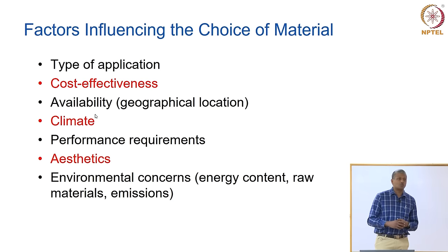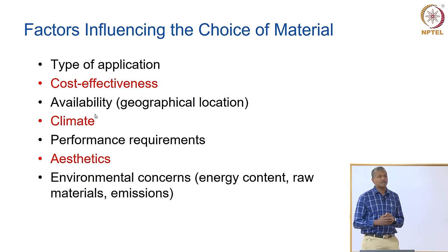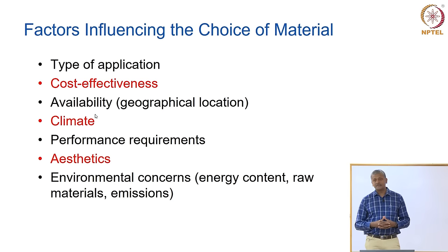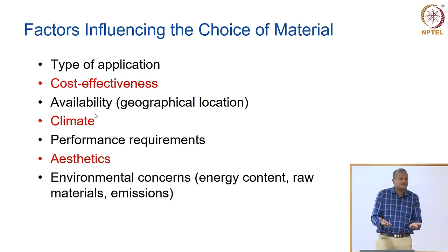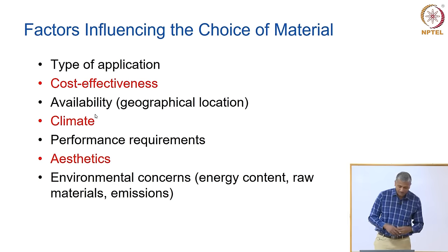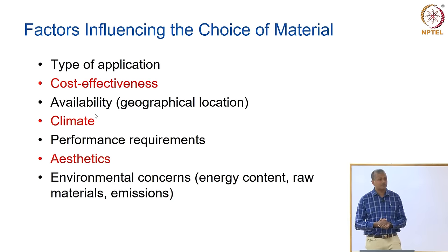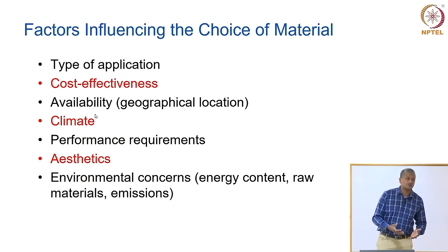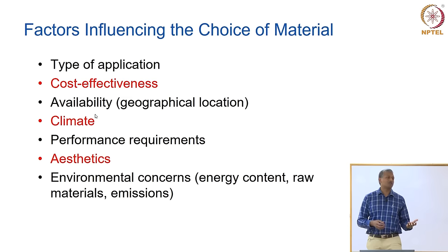Unfortunately, in India we started copying the western use of glass, and most IT buildings have come up with glass facades completely enveloping the building. The problem is it brings in a lot more heat, so we spend a lot more energy trying to air condition the buildings. Performance requirements, aesthetics, and environmental concerns — including energy content, raw material usage, depletion of natural resources, and emissions related to production — are also important factors governing material choice.